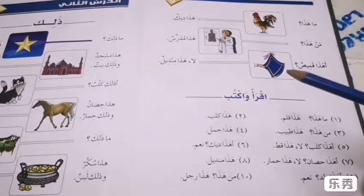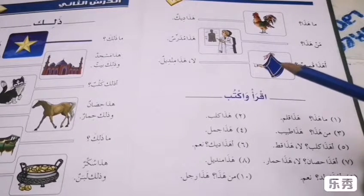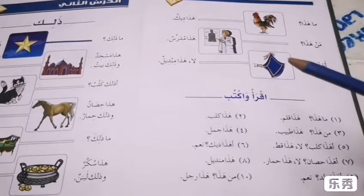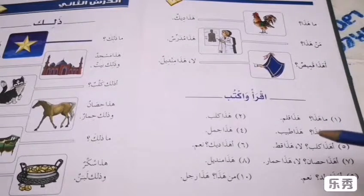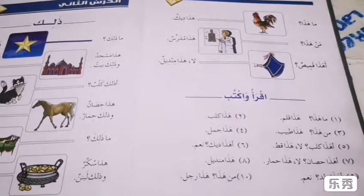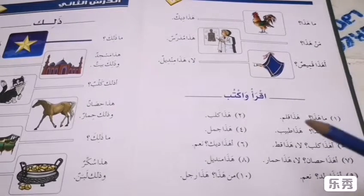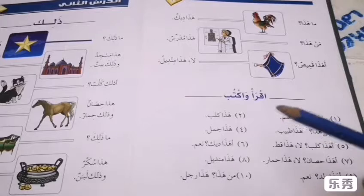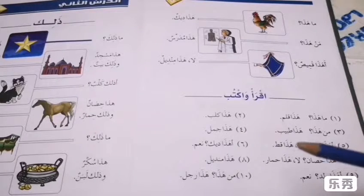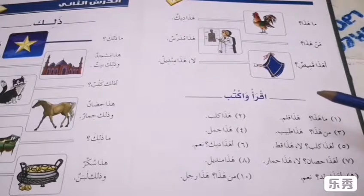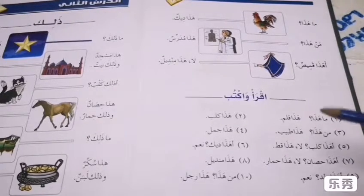Mind you guys, there is no such handkerchief here in Saudi Arabia — maybe there is, but I wasn't able to find it. Mindil here pertains to tissue. I can't find it. The next exercise is Ikra Waktub — read and write it, so you will memorize those kalimats. Number one: Ma Hada, Hada Kalamun — what is this? This is a pen.